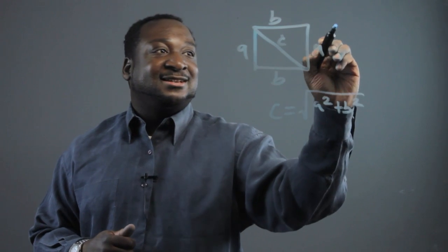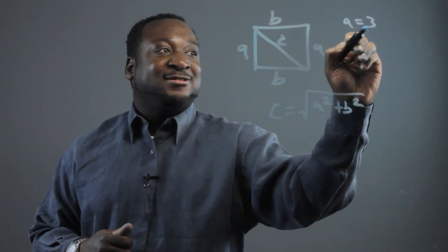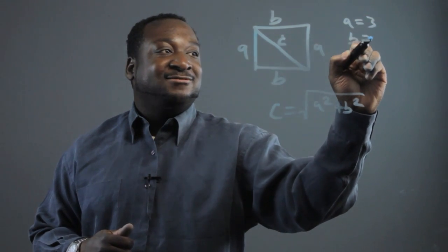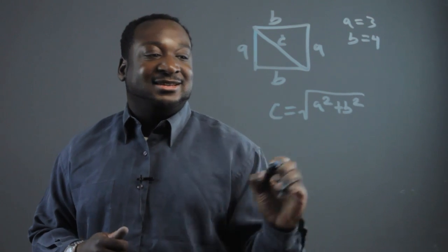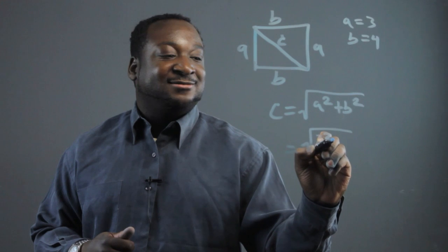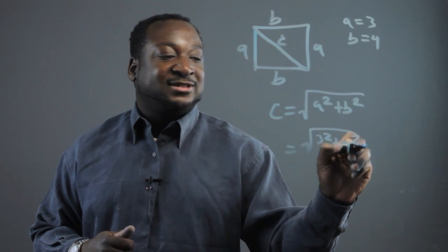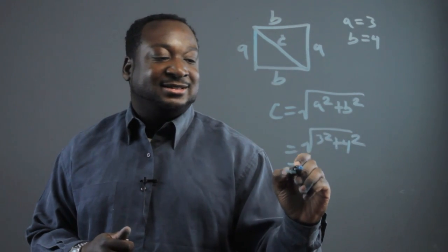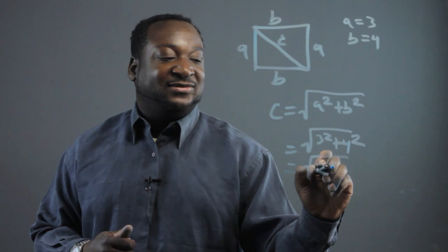So let's say our a equals 3 and our b equals 4. The diagonal would be the square root of 3 squared plus 4 squared. So that's the square root of 25.